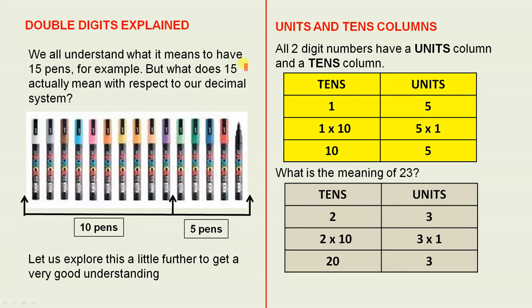But what does 15 actually mean with respect to our decimal system? Now here are 15 pens, and that's very easy to understand. You can just count them and you'll see that there are 15 of them. Now I've done a little trick here. I've divided the number of pens up into a group of 10.